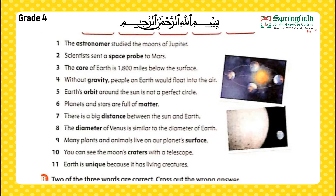Statement seven: There's a big distance between the Sun and Earth. Statement eight: The diameter of Venus is similar to the diameter of Earth. Statement nine: Many plants and animals live on our planet's surface. Statement ten: You can see the moon's craters with a telescope. Statement eleven: Earth is unique because it has living creatures.